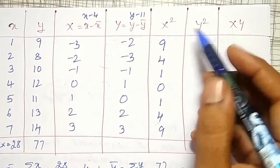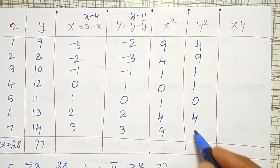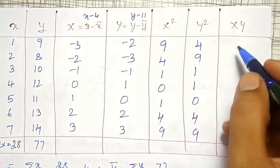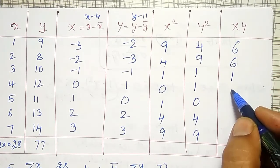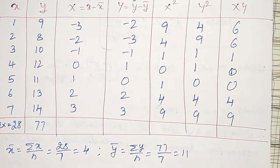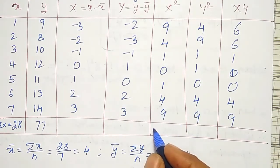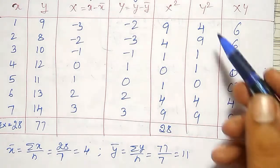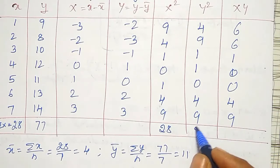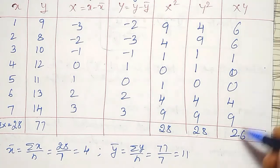The Y squared values are: 4, 9, 1, 1, 0, 4, 9. The X times Y values are: 6, 6, 1, 1, 0, 4, 9. Now calculating the summations: summation of X squared = 9+4+1+0+1+4+9 = 28. Summation of Y squared is also 28. Summation of XY = 6+6+1+1+0+4+9 = 26 if you add them.